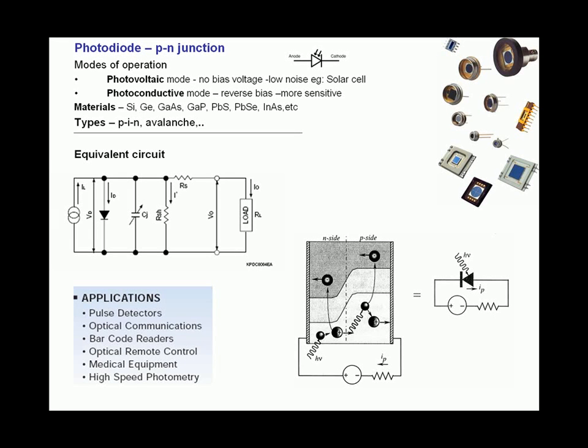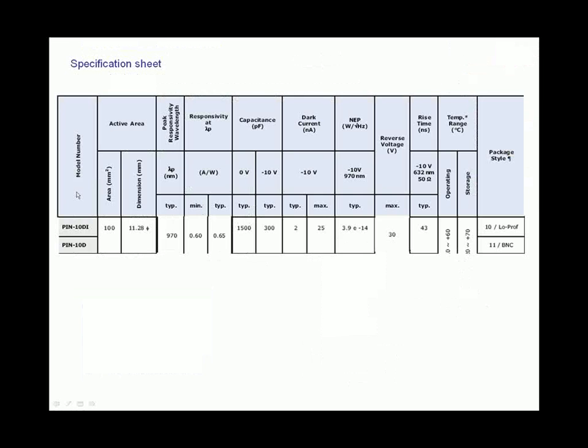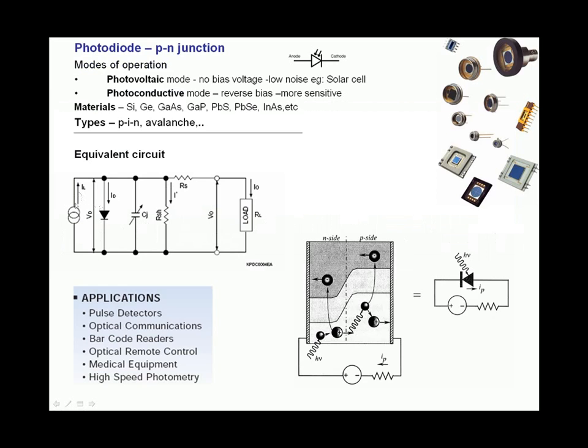What we also see on this slide is an equivalent circuit. A photodiode can be modeled by an equivalent circuit which has a constant current source indicated by the current flow IL in the circuit, with an ideal diode across it.